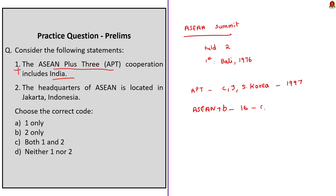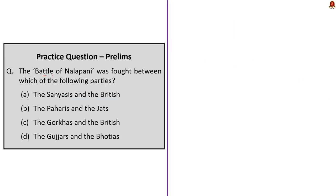India is a part of ASEAN Plus Six. ASEAN Plus Six is a grouping of 16 countries comprising 10 ASEAN members and 6 others: China, Japan, South Korea, Australia, New Zealand and India. Statement 2 says the headquarters of ASEAN is located in Jakarta, Indonesia — this is correct. So the correct answer is option B — 2 only.